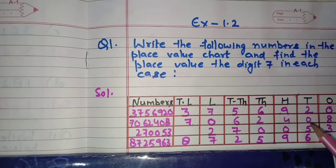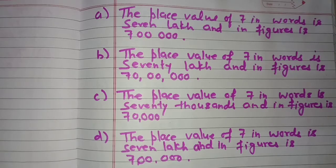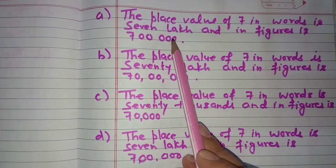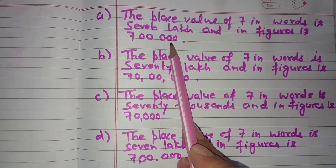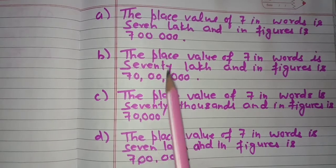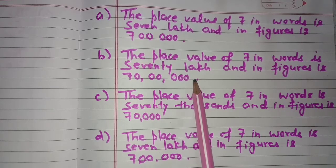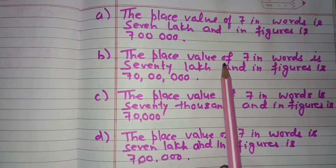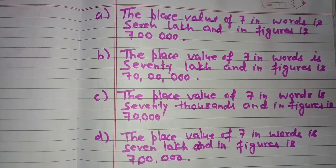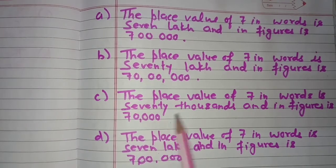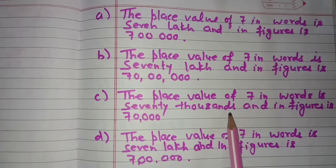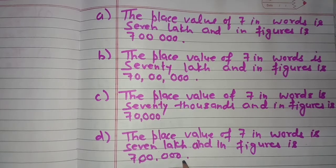Now we find the place value of digit 7 in each number. In the first number, 7 is at the Lakhs place, so its place value in words is seven lakh, and in figures: 700000. In the second number, 7 is at the Ten Lakhs place, so its place value is 70 lakh. In the third number, 7 is at the Ten Thousands place, so the place value is 70,000. In the last number, 7 is at the Lakhs place, so the place value is seven lakh.